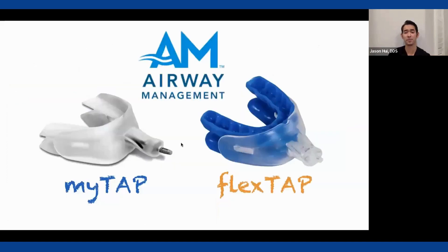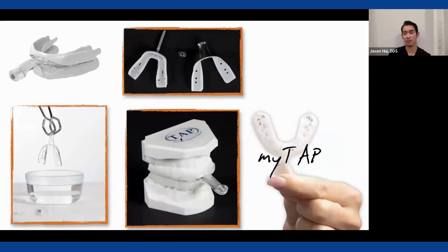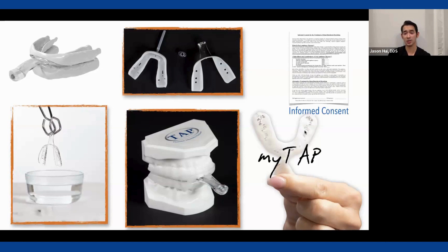Here's the MyTap — the over-the-counter non-custom appliance I've been using for about five years, and the only appliance used in research at the dental school. You boil and suction-fit it over the teeth. It's very similar to the FlexTap, which is why the FlexTap excites me. I make patients a MyTap when they first see me so they can be treated from day one, then transition them to a FlexTap. Both are my go-to for severe cases because you can bring the jaw back, seat the appliance, then advance the mandible without the patient having to rotate their jaw.